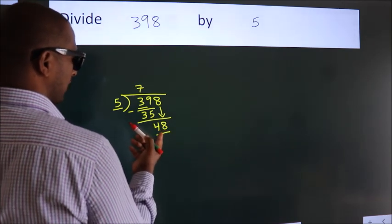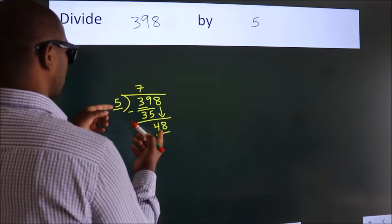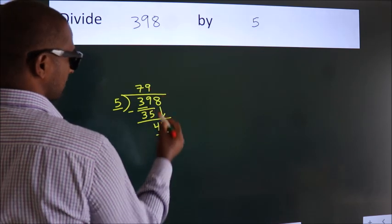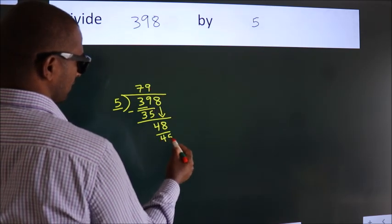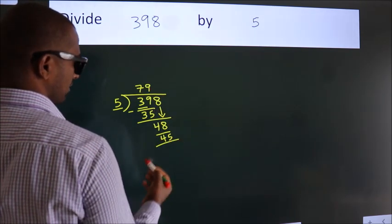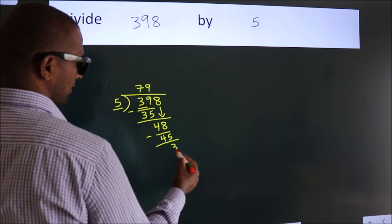A number close to 48 in the 5 table is 5 times 9 equals 45. Now we subtract and we get 3.